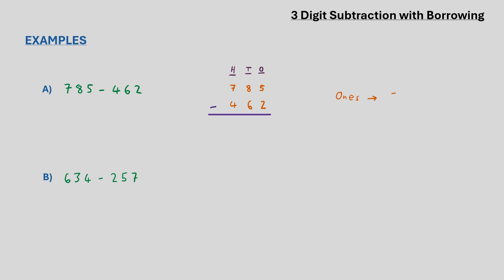The first subtraction in the ones column gives us 5 minus 2, which is 3. In the tens we have 8 minus 6, which is 2. And then for the hundreds we have 7 minus 4, which is 3, giving an answer to the sum of 323.